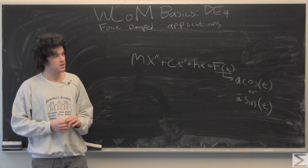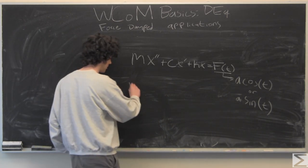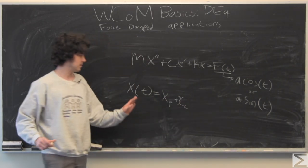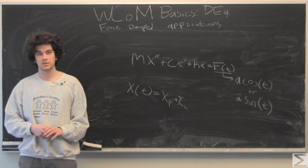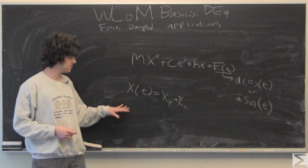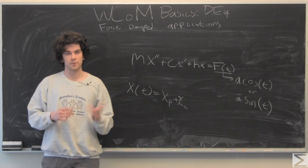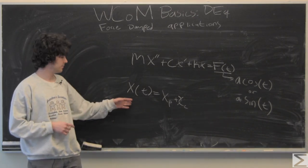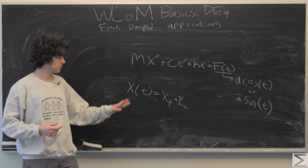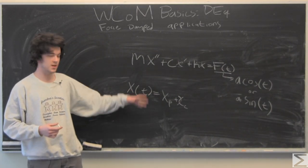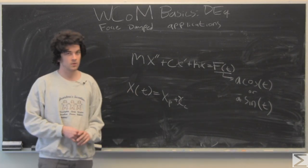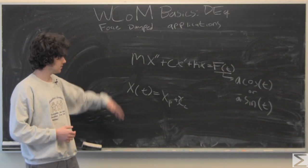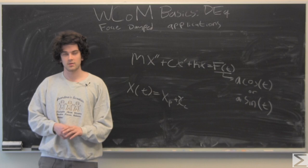The only thing to note in this more physical case is we're switching gears from y as a function of x to x as a function of t. Just think of this as a physical representation, so you have your position as a function of time. Not much else to the theory behind this, we're just going to jump into an example.